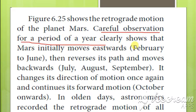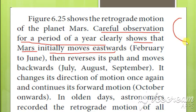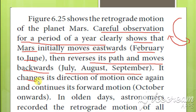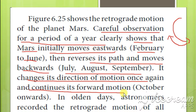Careful observation over the period of a year shows that Mars initially moves towards the east from February to June, then reverses its path backwards during July, August, and September, then changes direction once again and continues its forward motion.